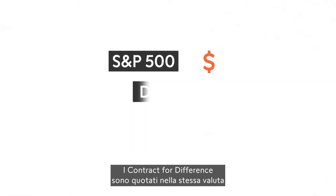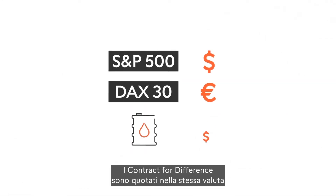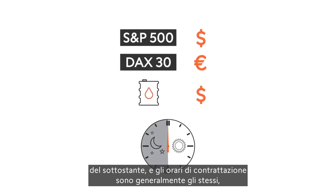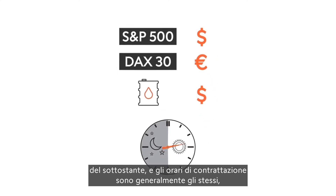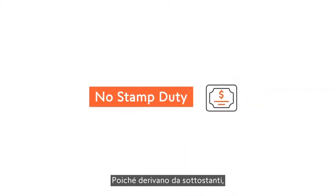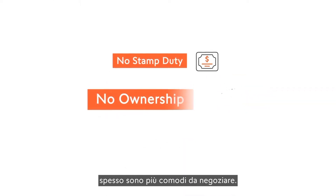Contracts for difference are quoted in the same currency as the underlying asset, and dealing hours are generally the same, sometimes even better. Since they derive from underlying assets, they are often more convenient to trade.